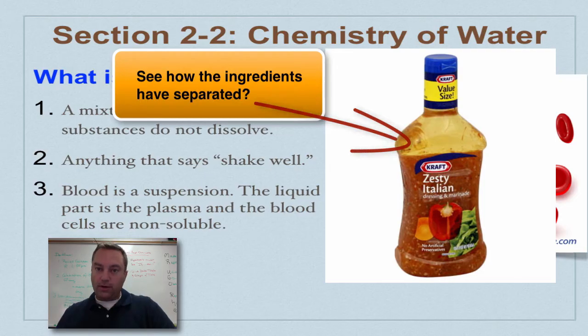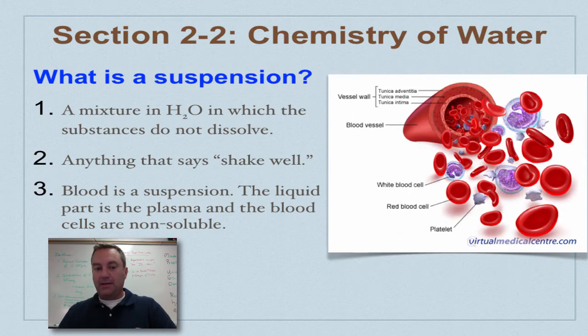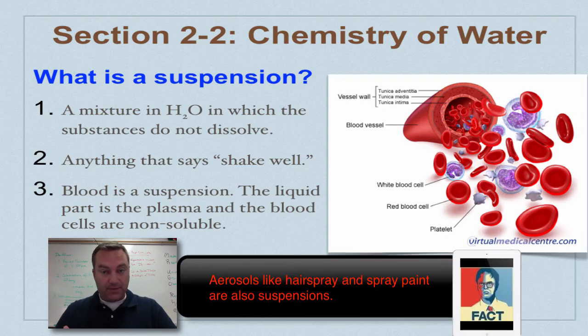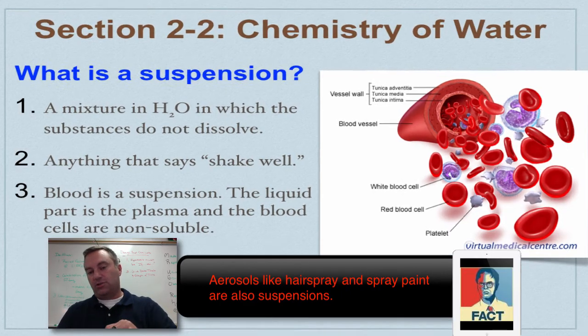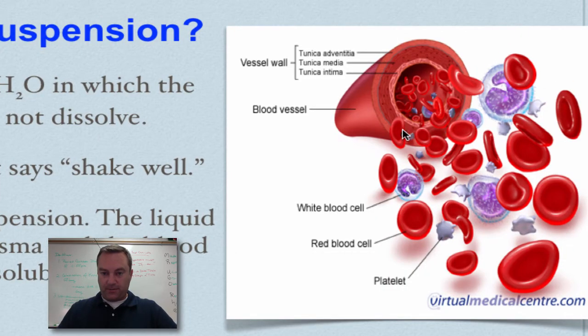Now, within you and other mammals, blood is a suspension. The liquid part of the blood is called plasma, and then the things that do not dissolve in the water but are suspended or floating around in it, those would be your various blood cells. And I want you to zoom in here onto this picture.